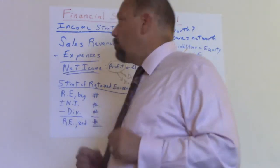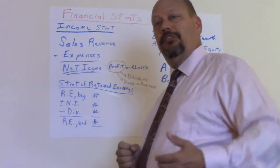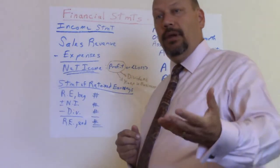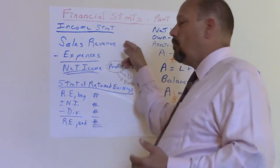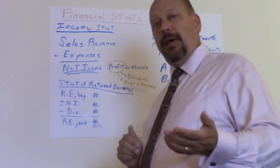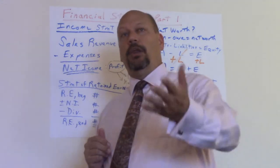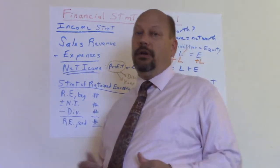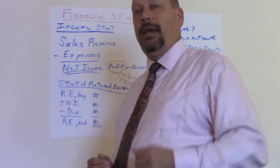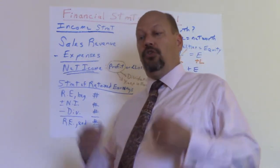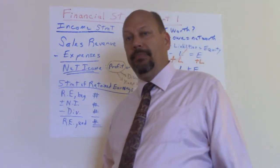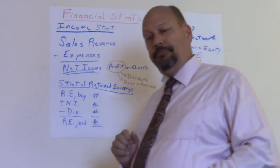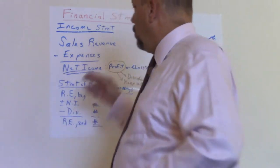The first statement is the income statement. As a business you make sales — we use the word revenue, meaning money flowing in. So sales revenue minus expenses. For example, a wage earner getting paid ten dollars an hour works eight hours and makes eighty dollars. It cost something to make that eighty dollars — say you drove to work and used gasoline, plus wear and tear on the car. That's the same concept: sales revenue less expenses.